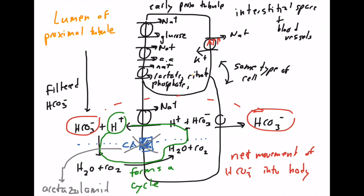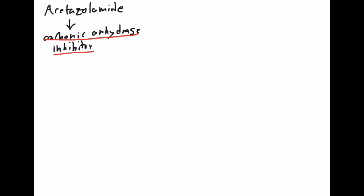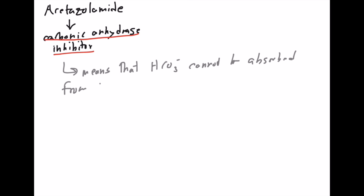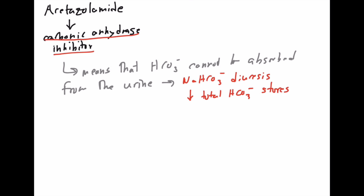Acetazolamide shuts this whole thing down by inhibiting carbonic anhydrase, leading to diuresis of HCO3-. This means HCO3- is going to be lost — its concentration will increase in the tubular lumen and it won't be reabsorbed very well. What you're going to see is a diuresis of sodium bicarbonate, and you're actually going to deplete your total body stores of bicarbonate, which is a weak base.